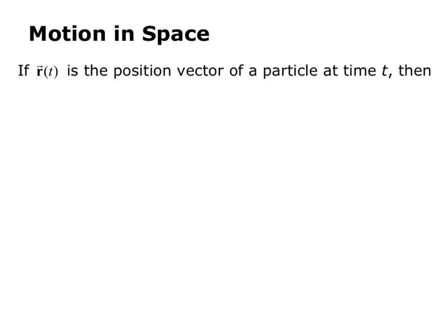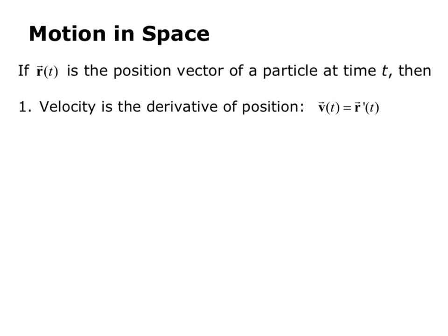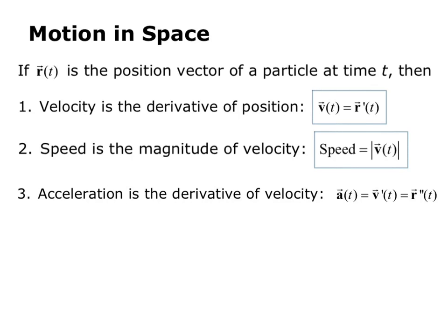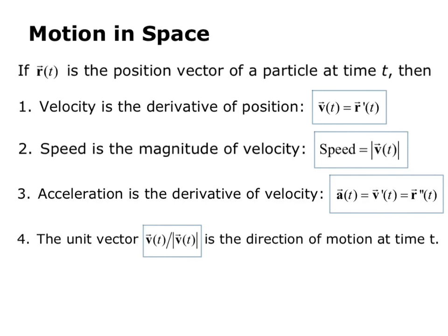Motion in space: if r of t is the position vector of a particle at time t, then velocity is the derivative of position, so v of t equals r prime of t. Speed is the magnitude of velocity, so speed equals the magnitude of v of t. Acceleration is the derivative of velocity, so a equals v prime of t, which is r double prime of t. The unit vector v of t divided by the magnitude of v of t gives the direction of motion at time t.